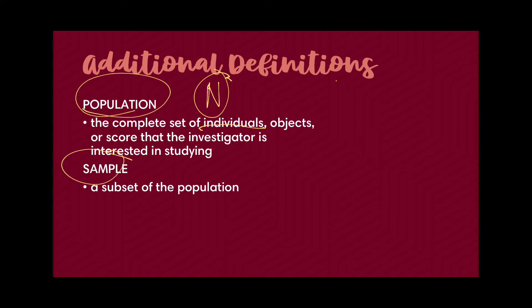We also have the sample, represented by the small letter n, which is the subset of the population. Usually, when the population is too large and it's very impractical to get data from all of them — especially if your population is really big, more than 500 — then it's very impractical to collect data from everyone unless you want to do a census. We'll talk about population and sampling in a different video lecture.